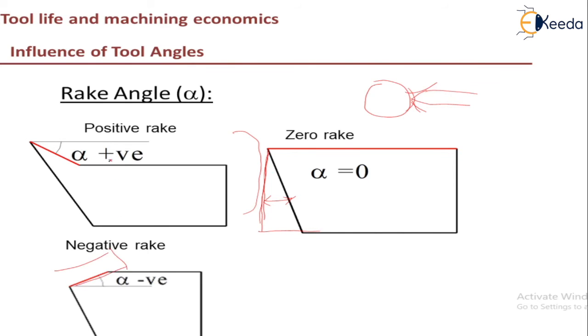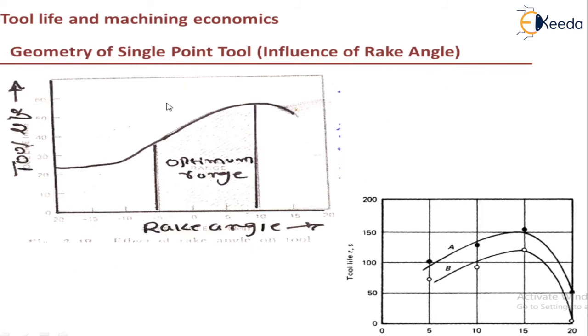And that is why positive rake is required. And if you have too much of positive rake, then the wedge angle decreases and thereby the strength of the metal decreases. And as you can see, if it is sharp also, it may cut this cutting edge because of contact between the workpiece. So that is why there should be some nose radius given to this workpiece. So these are all the influencing, that is, tool angle, that is rake angle, which is influencing the tool life.